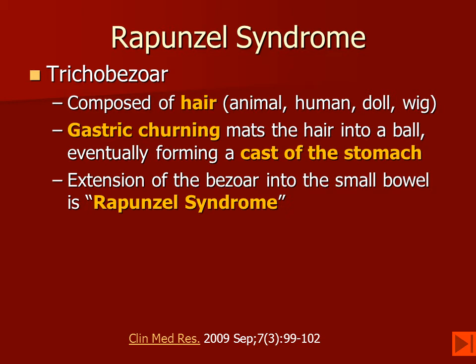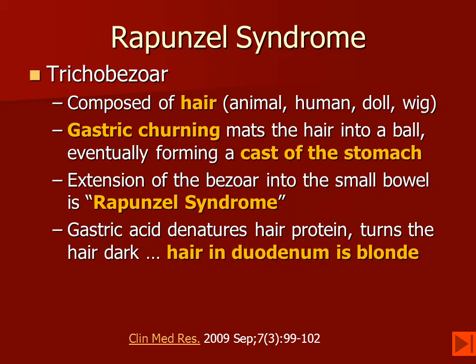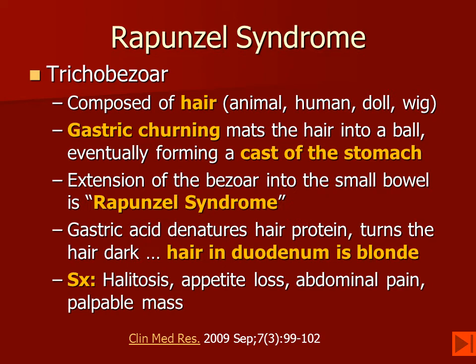Gastric acid denatures the hair protein and turns the hair in the stomach dark, but the hair in the duodenum continues to be a lighter color and looks blonde. These patients may have halitosis, appetite loss, abdominal pain, or even a palpable mass.